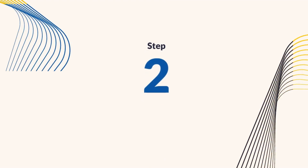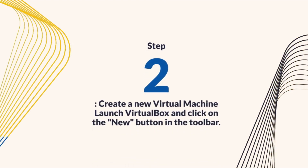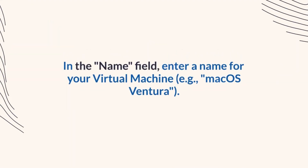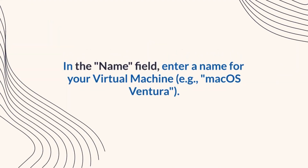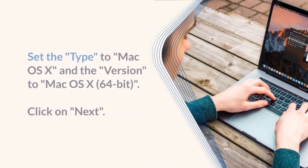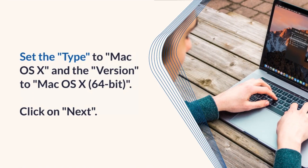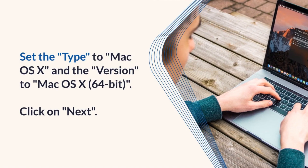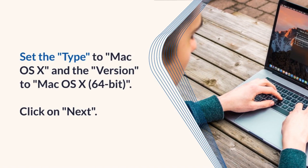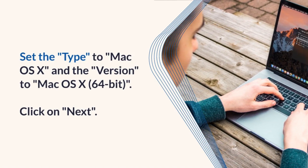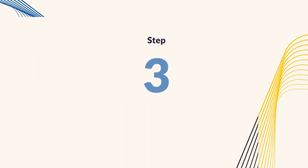Step 2: Create a new virtual machine. Launch VirtualBox and click on the New button in the toolbar. In the Name field, enter a name for your virtual machine, for example, macOS Ventura. Set the type to macOS X and the version to macOS X 64-bit. Click on Next.